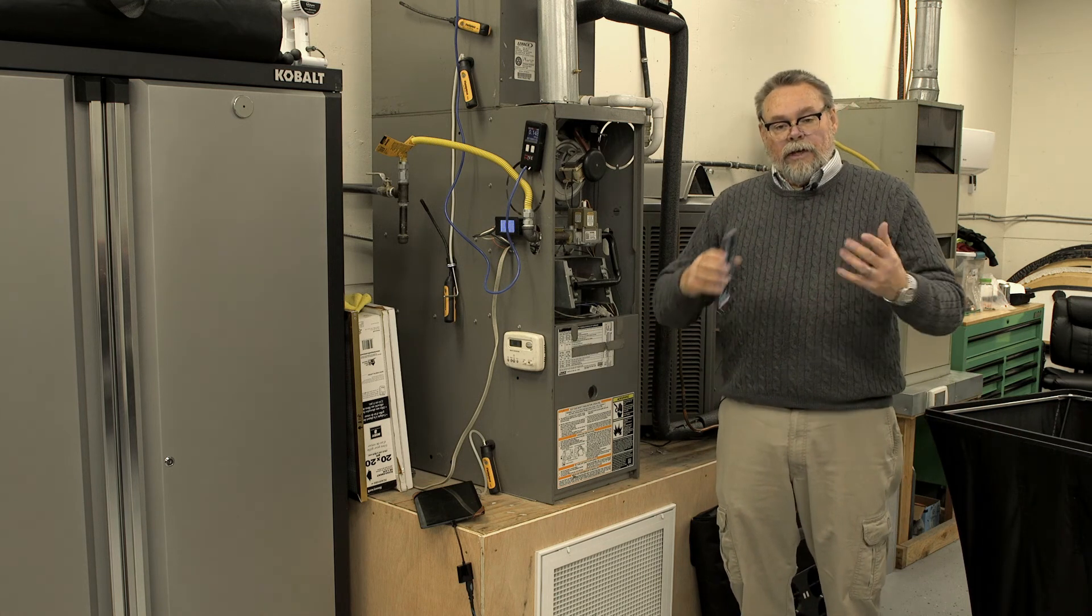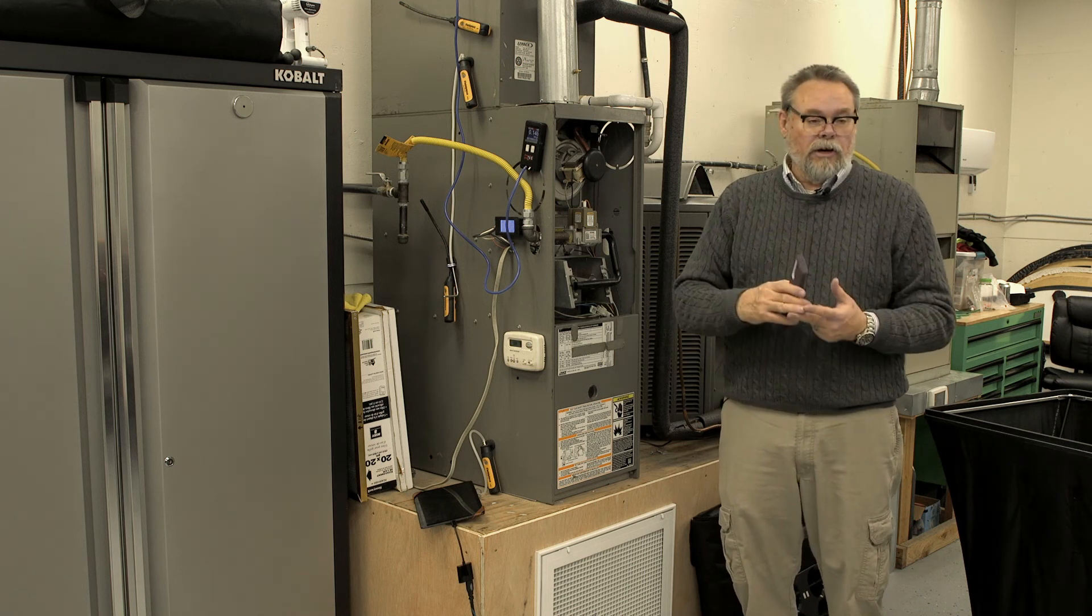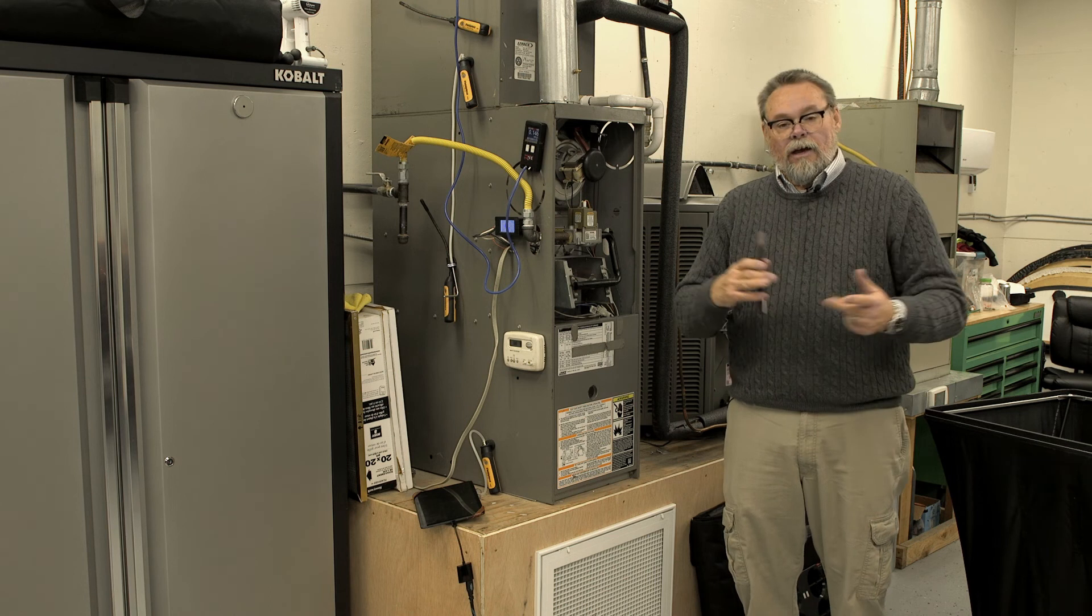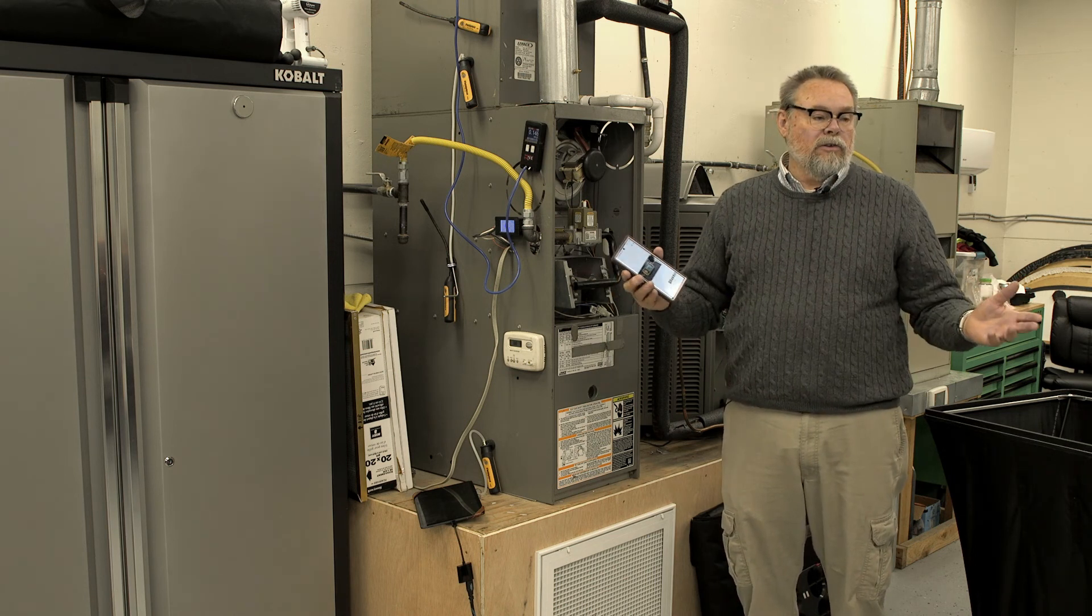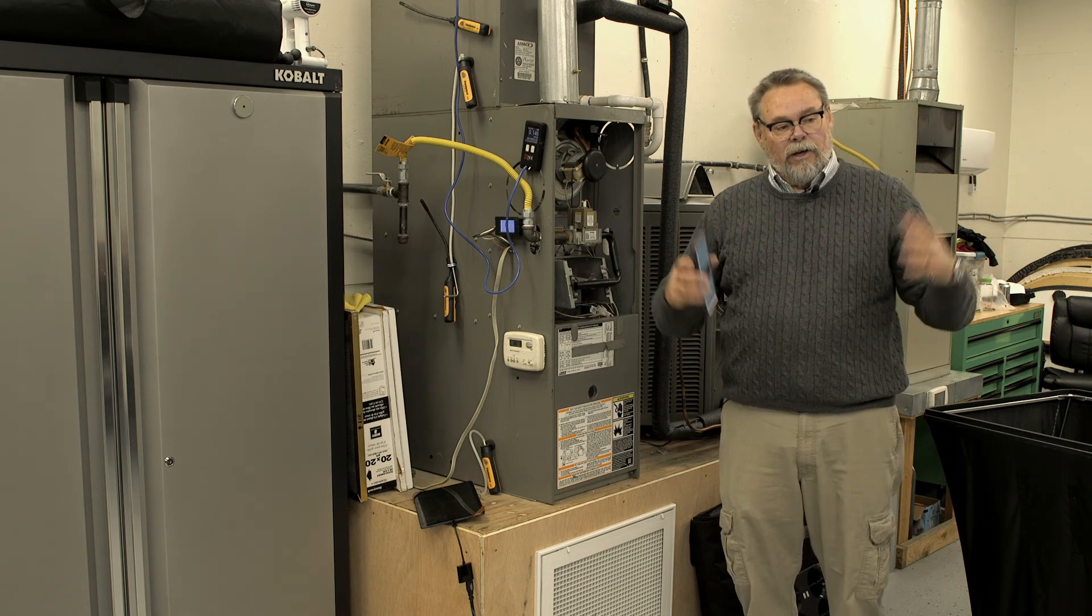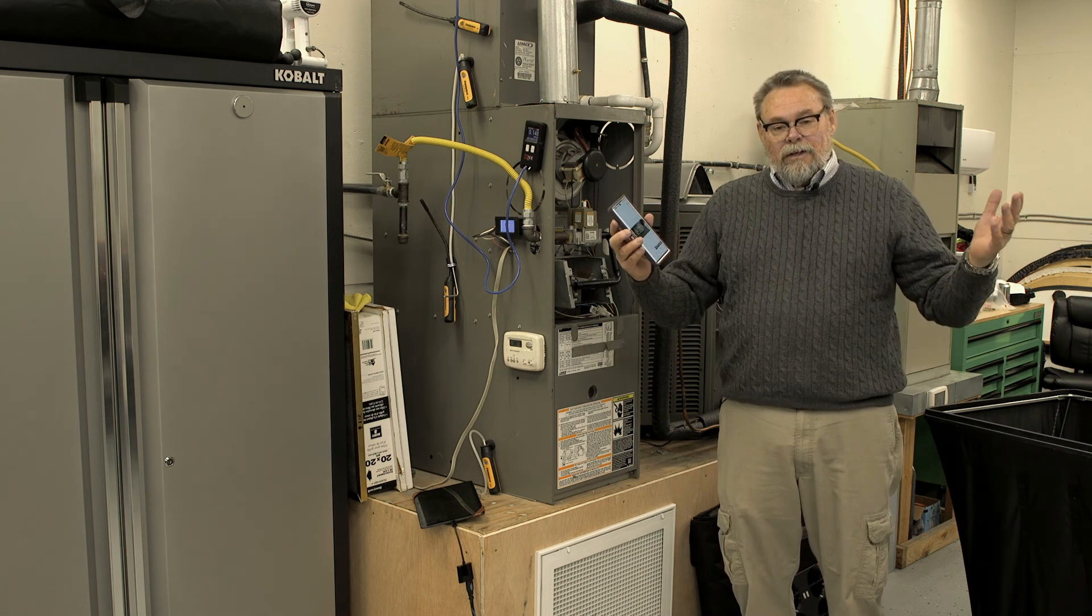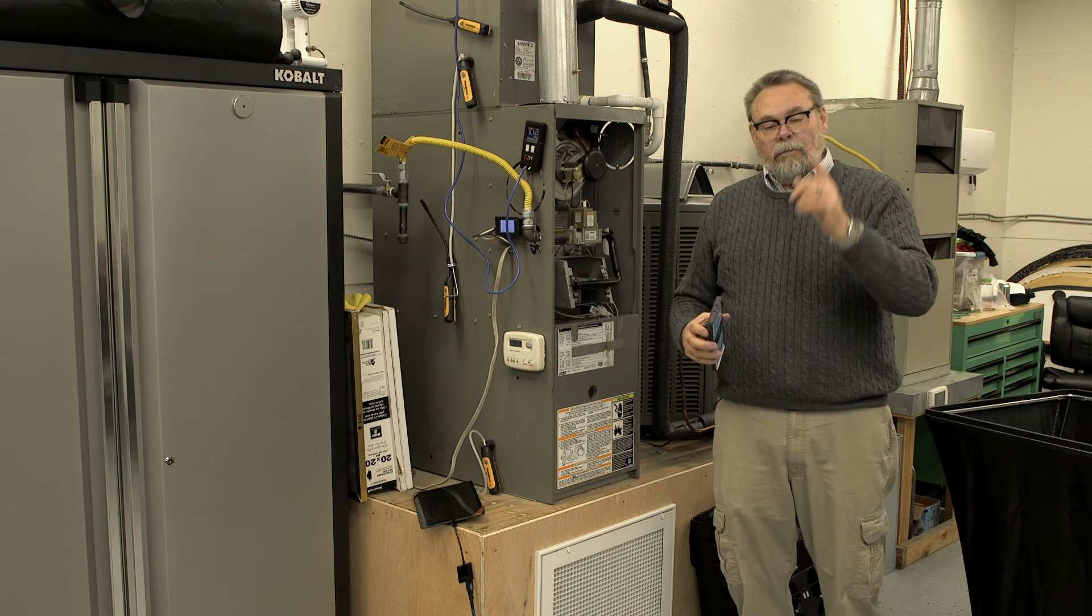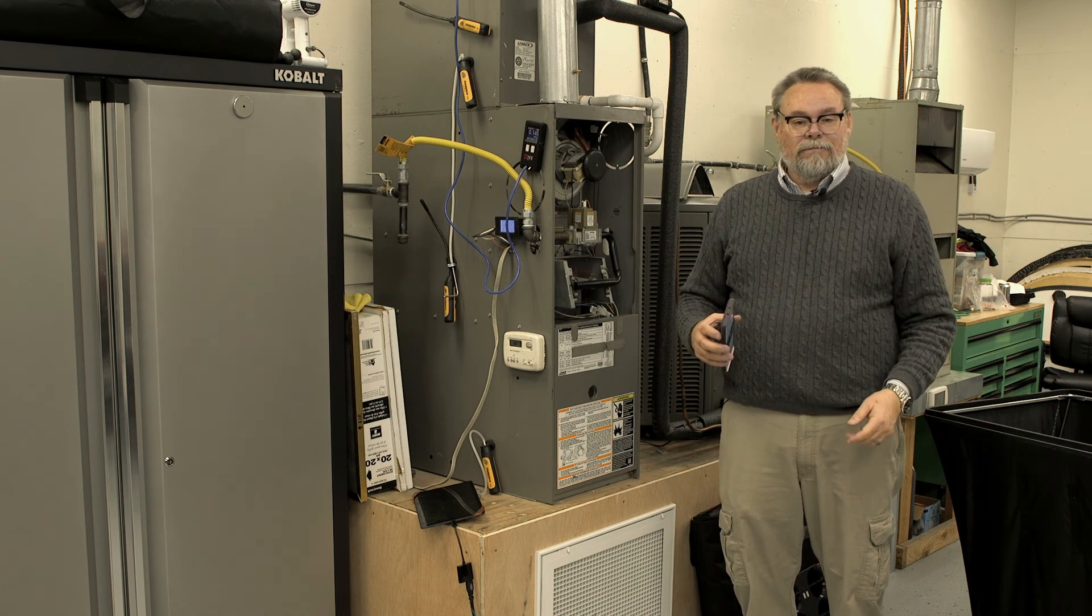So next time you're out in the field, take these measurements, get your static pressure, get your airflow through the system, measure the difference in temperature, TD, and temperature rise, and then multiply out and get your BTUs. CFM times 1.08 times delta T will give you your BTUs per hour that the furnace is producing. All right. Well, thanks for watching and please like and subscribe and stay tuned for the next video. Thanks again.